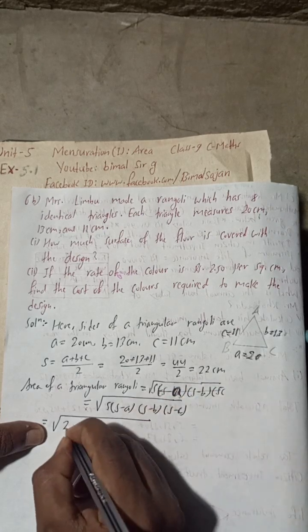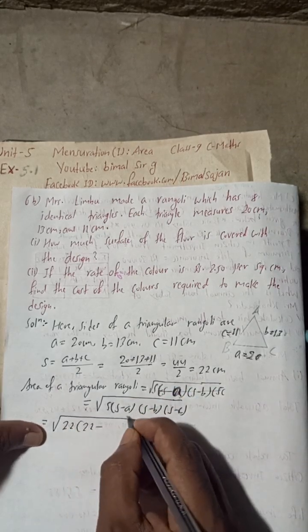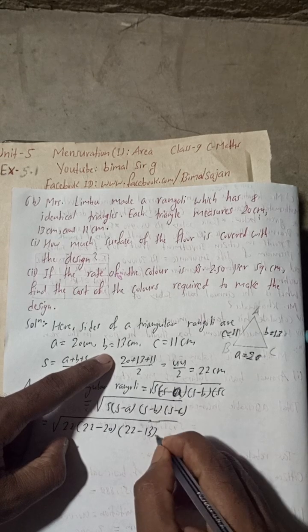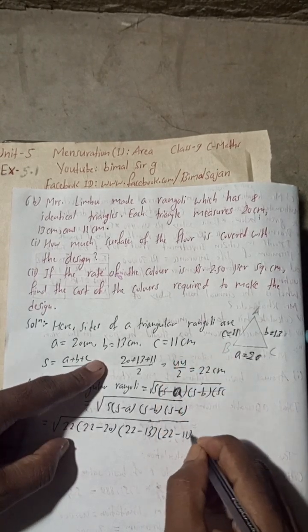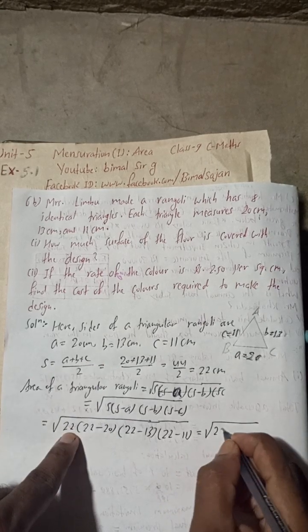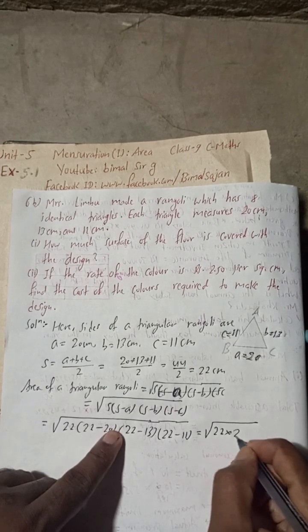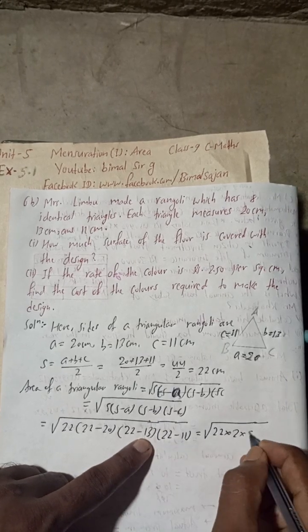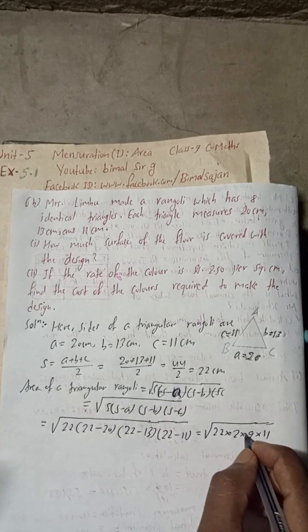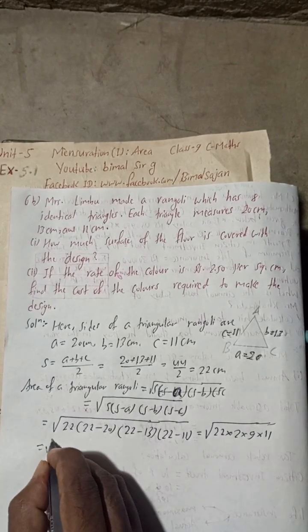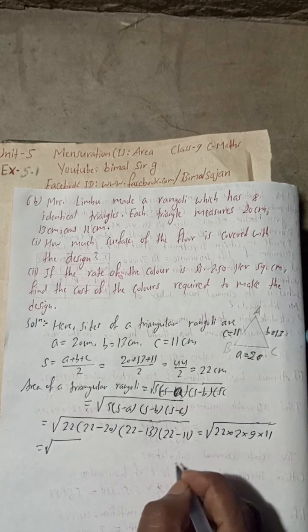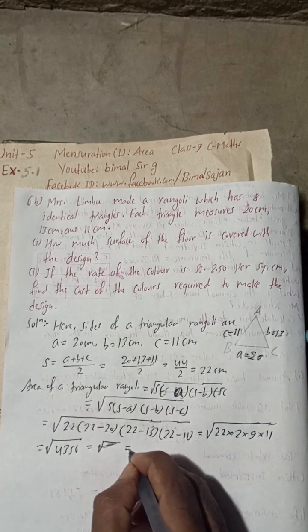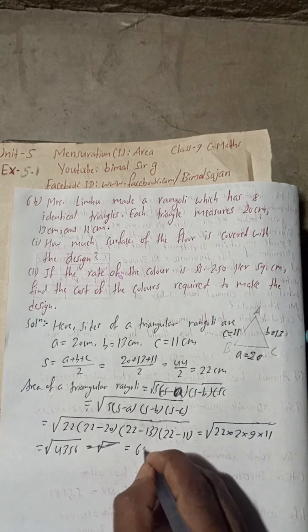Substitute the value: s is 22, so √[22(22-20)(22-13)(22-11)] = √[22 × 2 × 9 × 11] = √4356 = 66 cm².